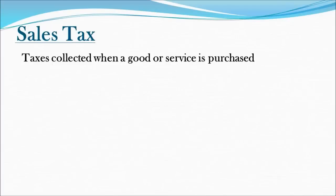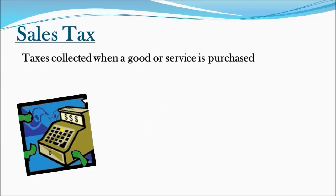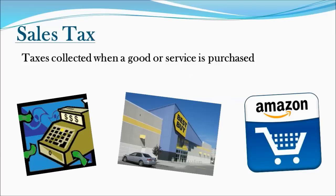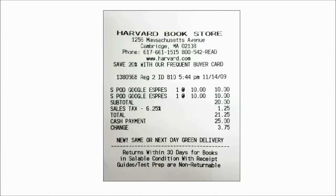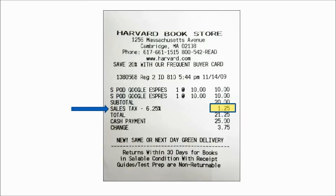Our next one is sales tax. Sales taxes are levied by the government at the point of sale — a tax collected when you pay for something. The decision to have a sales tax is up to each state, as there is no federal sales tax. States have taxes for in-person purchases as well as online purchases. On a sample Harvard Bookstore receipt, the person spent $20 with a sales tax rate of 6.25%, resulting in $1.25 in sales tax sent on to the state government.